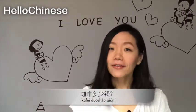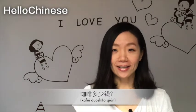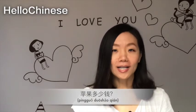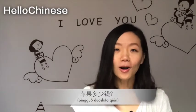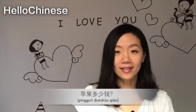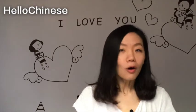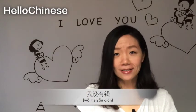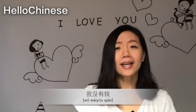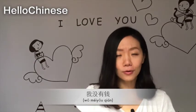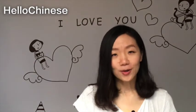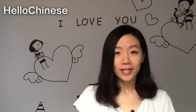The common phrase with qián is to ask 'how much money?' For example: 咖啡多少钱 (café duōshao qián) — how much is the coffee? 苹果多少钱 (píngguǒ duōshao qián) — how much is the apple? Or you can say 我没有钱 (wǒ méiyǒu qián) — I don't have money, I'm poor. That's how to use qián.